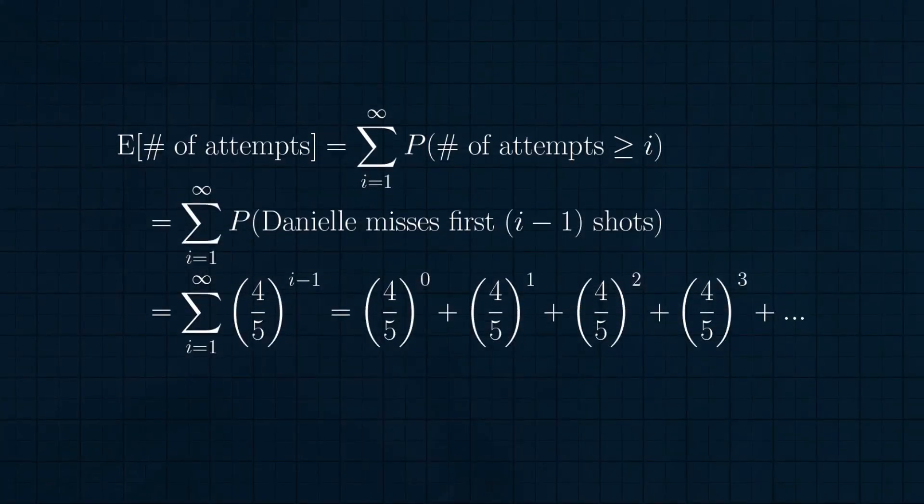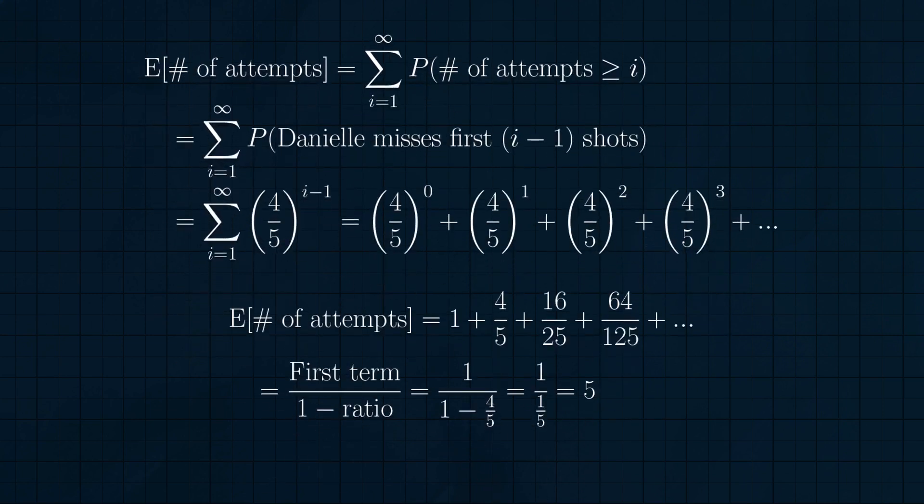So using the formula, the expected number of attempts is the sum over i from 1 to infinity of this probability, four-fifths to the i-1. Okay, this is just a geometric series with first term 1 and ratio four-fifths, so the formula for its sum is the first term divided by 1 minus the ratio, or 1 over 1 minus 4-fifths, or 1 over 1-fifth, or 5. So the expected value really was 5. Cool.